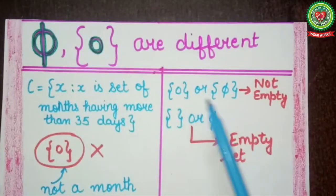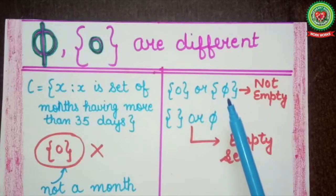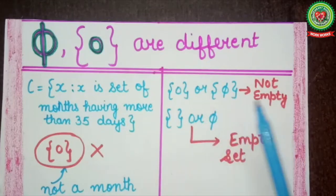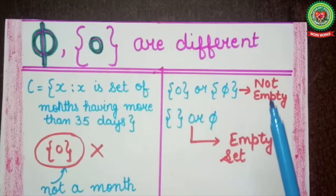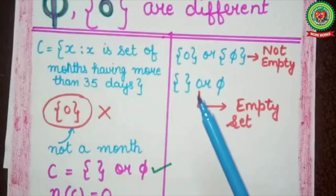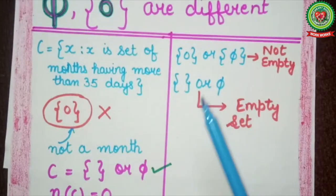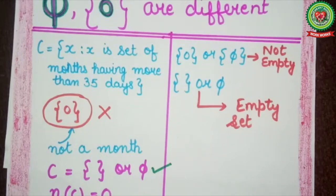We write here {} or φ, and its cardinal number is 0. Students, remember: if we write {0} or {φ} — zero in brackets or phi in brackets — that does not mean it is an empty set. Those would be non-empty sets. Only the empty brackets {} or the symbol φ alone represents the empty set.